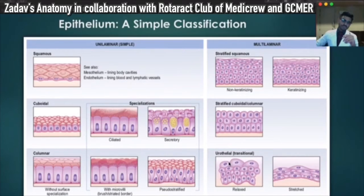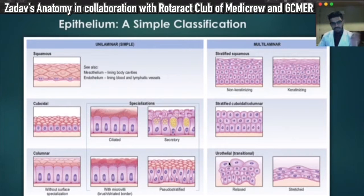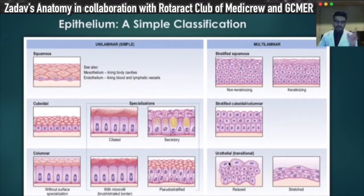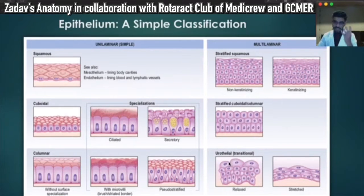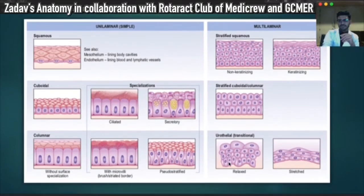Here are a couple of things I want you to find out as soon as the lecture is over. First, examples of each of these epithelial types — just write them down. Then, one of the most commonly asked questions: what are the characteristic features of transitional epithelium? Come up with at least four points — very commonly asked in the practical viva.